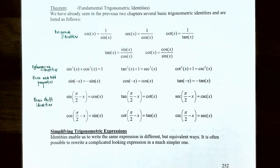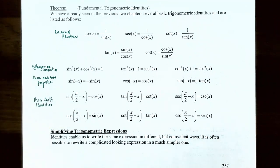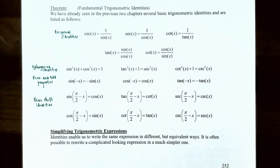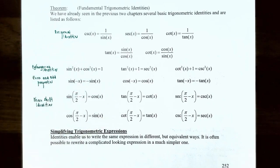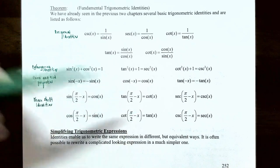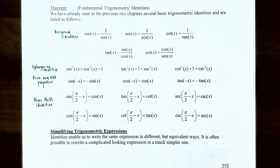We also have six phase shift identities: sine of (π/2 − x) equals cosine of x; cosine of (π/2 − x) equals sine of x; tangent of (π/2 − x) equals cotangent of x; cotangent of (π/2 − x) equals tangent of x; secant of (π/2 − x) equals cosecant of x; and cosecant of (π/2 − x) equals secant of x.